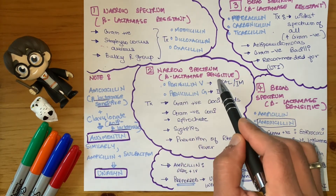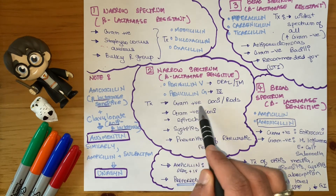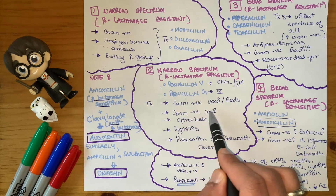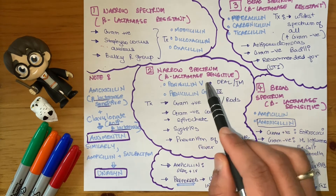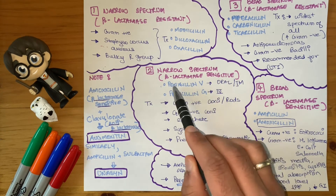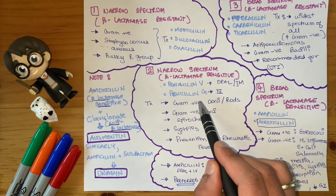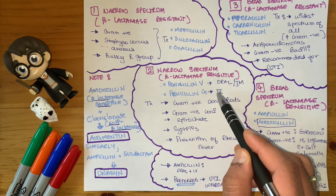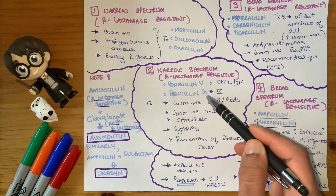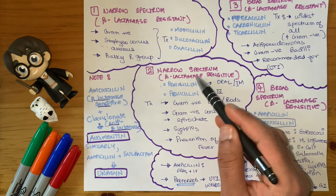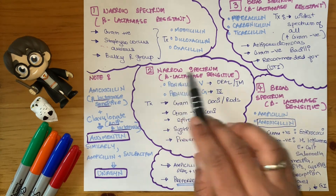The narrow spectrum beta-lactamase sensitive group fights against gram-positive cocci and rods, gram-negative cocci, and spirochetes — a bit broader than expected, but still sensitive, meaning they don't have a bulky R group. These are penicillin V and penicillin G. Penicillin V is a modified version of penicillin G — penicillin G could only be administered parenterally by injection because stomach acid would inactivate it. Scientists created penicillin V with a bulky R group to fight the acidic environment, allowing it to be taken orally.